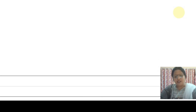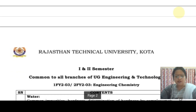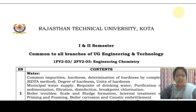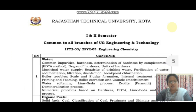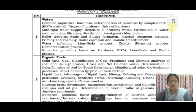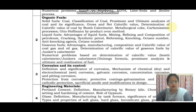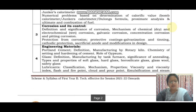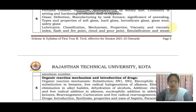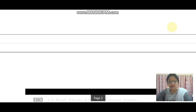I think you all are worried about your RTU examination, so I am here to help you out. First of all, we will discuss the syllabus of Engineering Chemistry. Here we have the syllabus as prescribed by RTU, Rajasthan Technical University. It has 5 different units including the major chapters: Water, Organic Fuel, Corrosion and its Control, Engineering Materials, and Organic Reaction Mechanism and Introduction of Drugs.